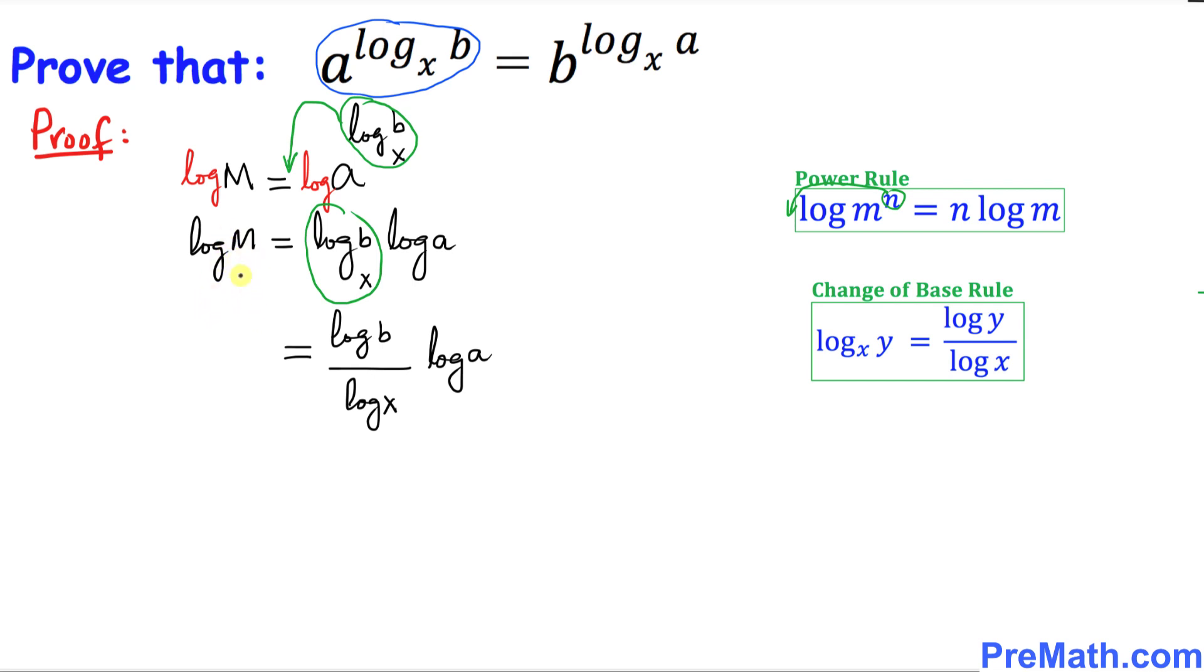Now, I want you to see we have these two things. I want you to switch their position, commute their positions. I can write log of a first divided by log of x at the denominator, and then log of b. Just switch their positions. And still we have log of M on the left hand side.